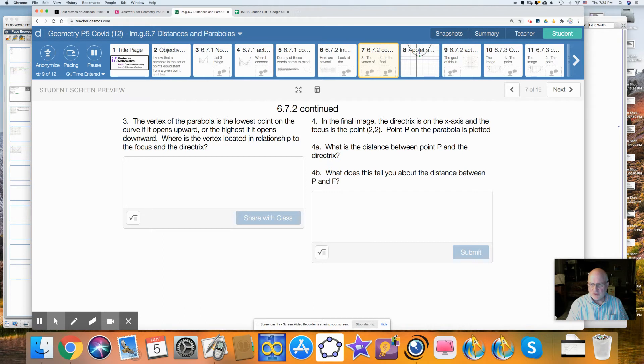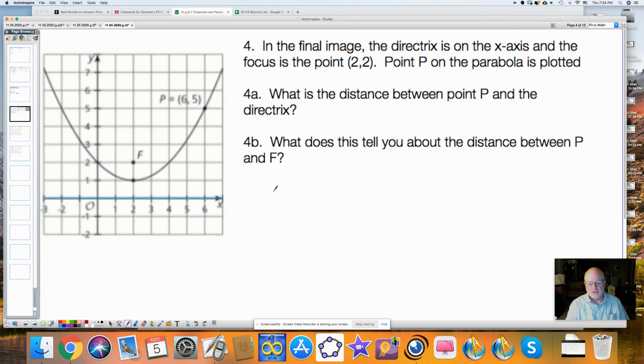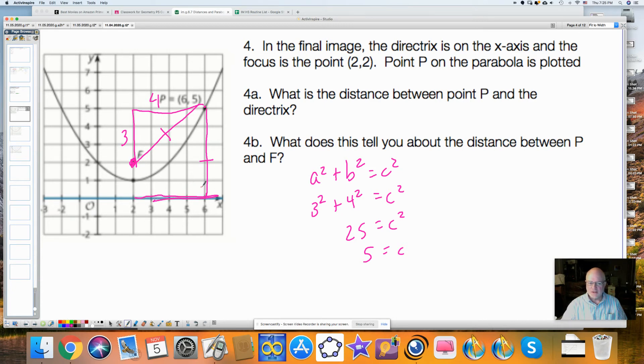In the final image, the directrix is on the x-axis, and the focus point is (2, 2). Point P is on the parabola, it's plotted. What is the distance from P to the directrix? So the final image would be this one. What is the distance from F to P? And we'll notice here, I could make this into a right triangle. It's going to be 3 wide and 4 long, and a² + b² = c², which is that 3² + 4² = c². That's 9 + 16 = 25 = c², so c = 5. Also notice that this distance here is 5. This distance is the same as this distance. That is, a point on the curve, on the parabola, is equidistant, the same distance, from the focus, that's this point, and the directrix, which is this line. The distance from the line is going to be vertical like this.